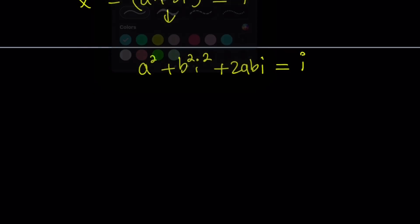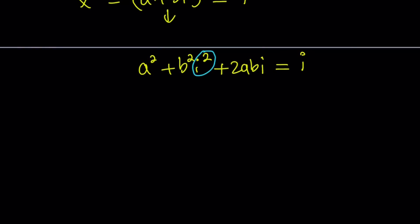By definition, i squared is negative 1. If you don't know anything about complex numbers, at least you should know that i squared is negative 1. Okay, so now this gives us the following. a squared plus b squared multiplied by negative 1 is going to bring in minus b squared plus 2abi equals i.